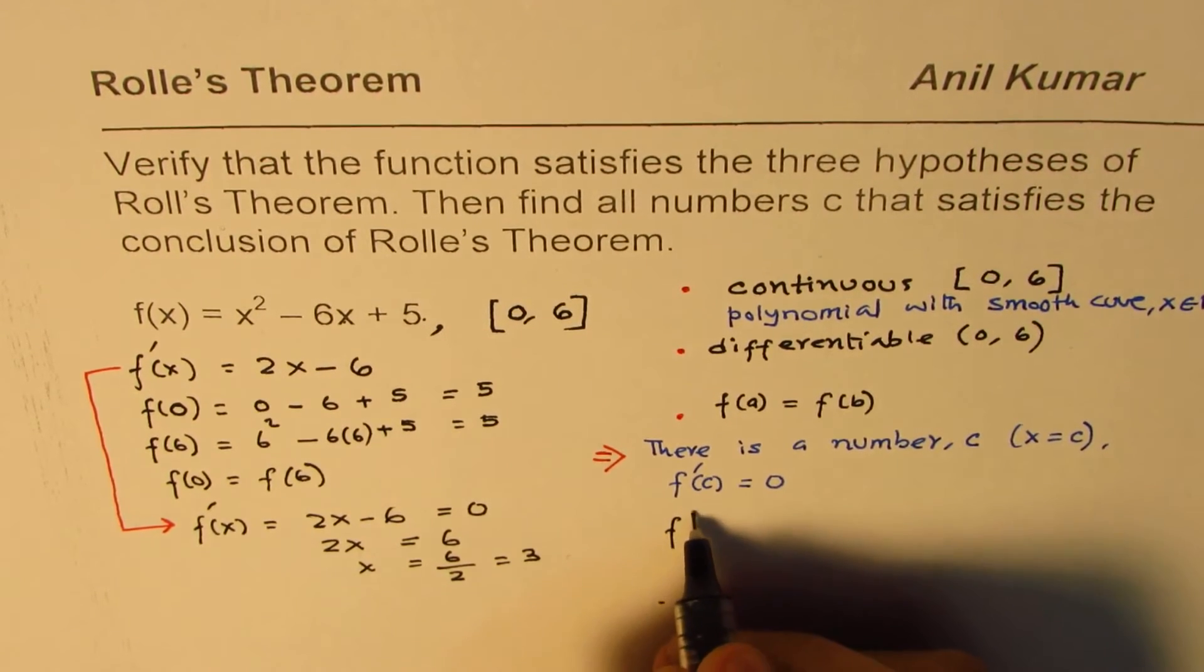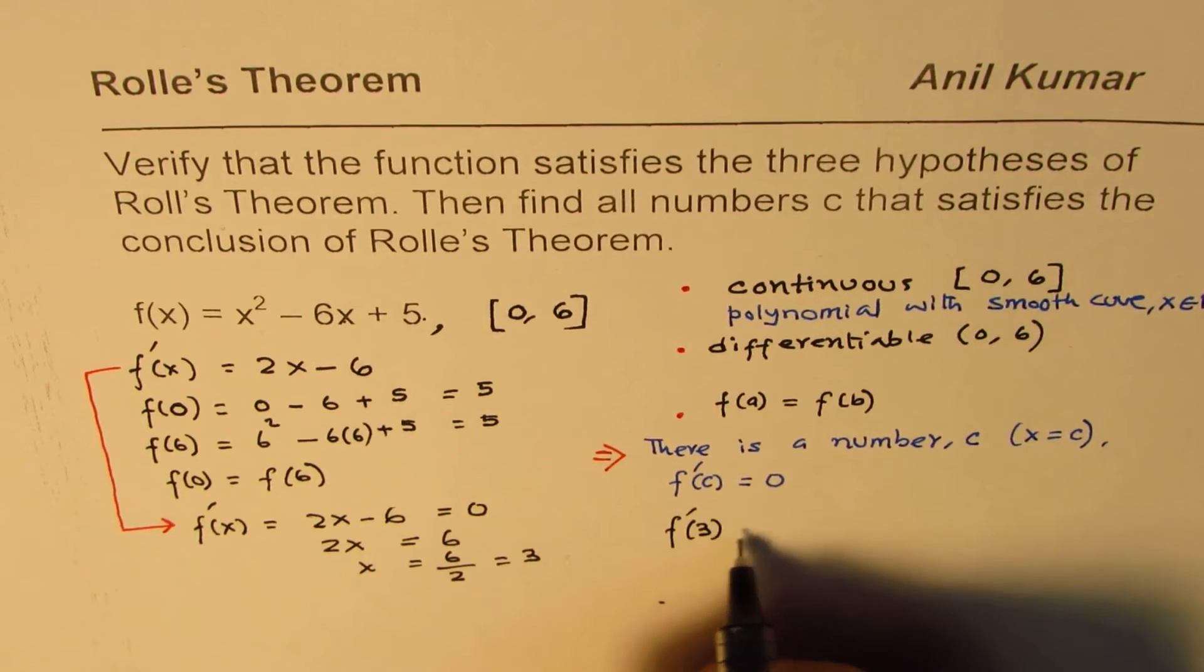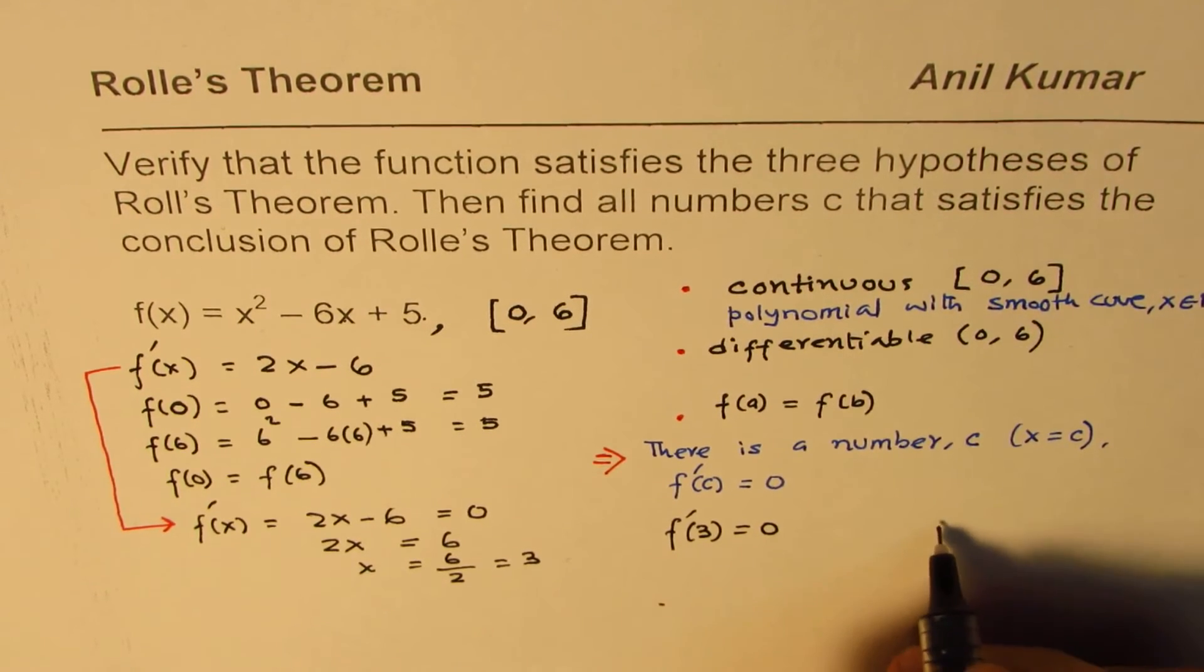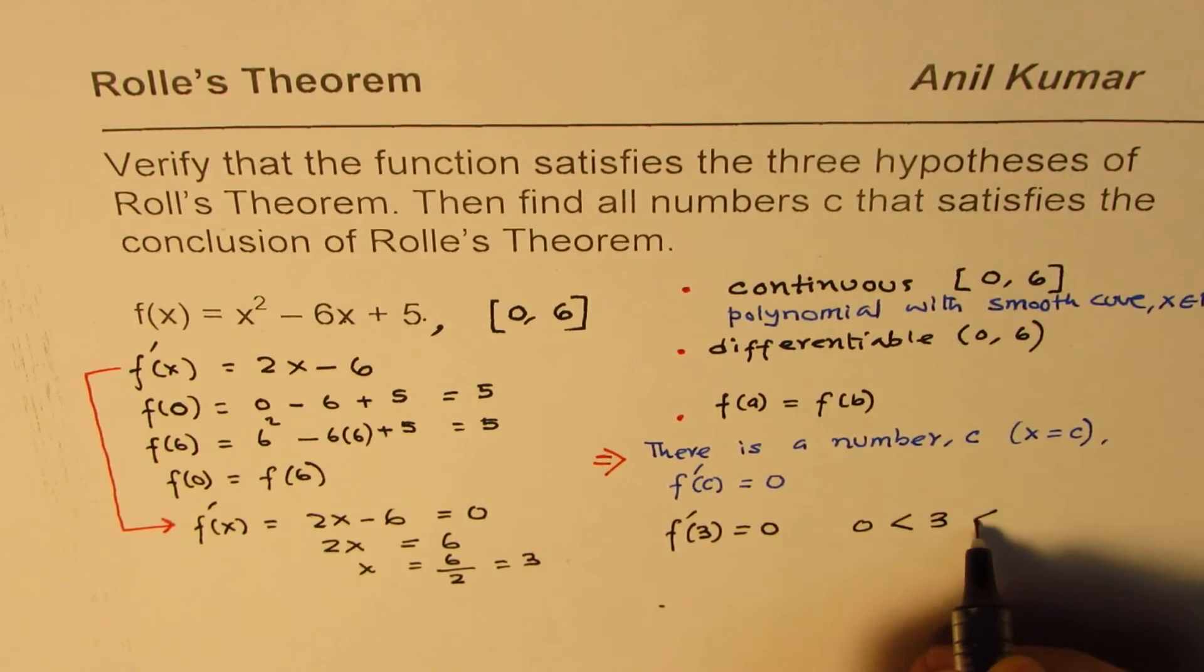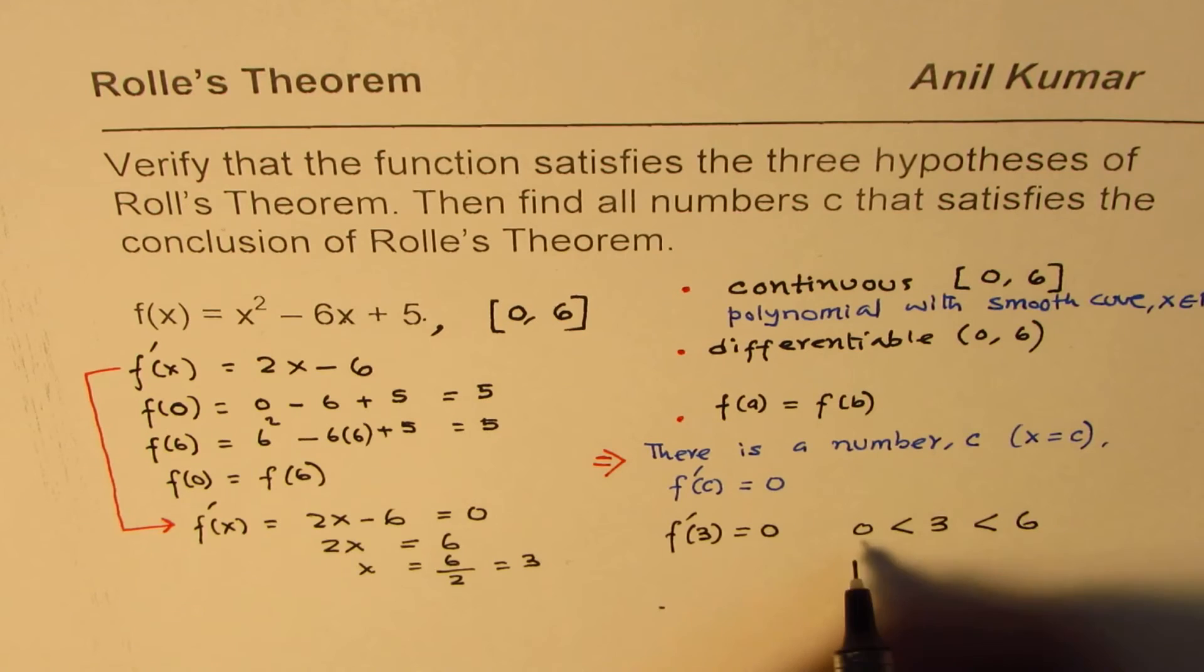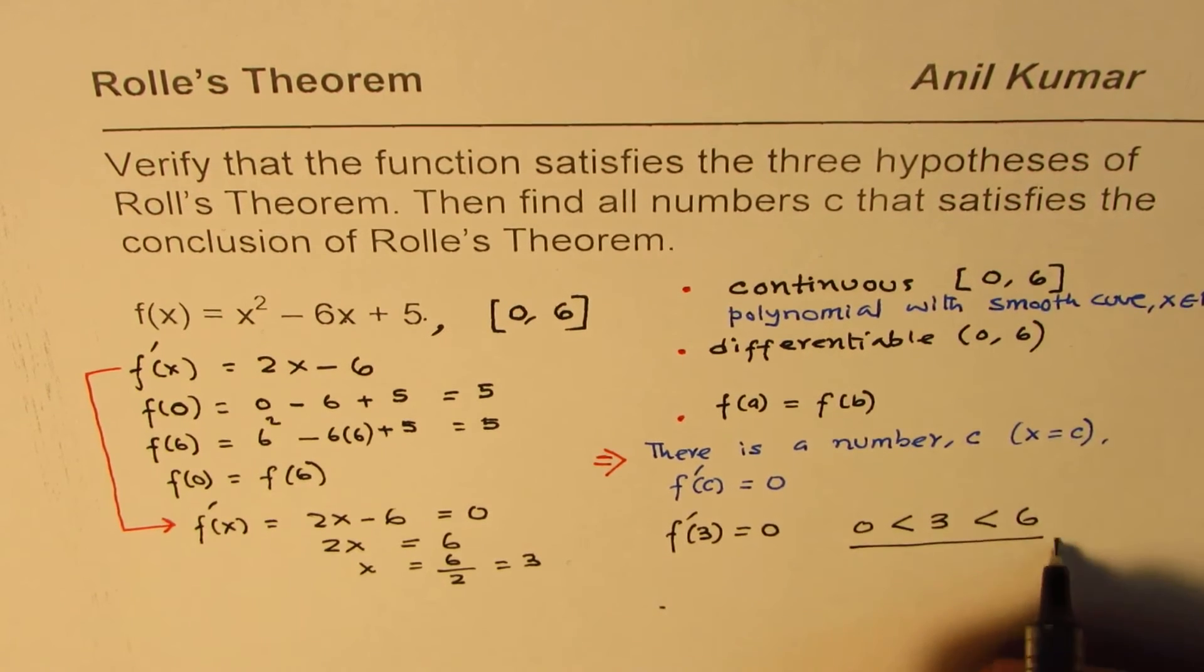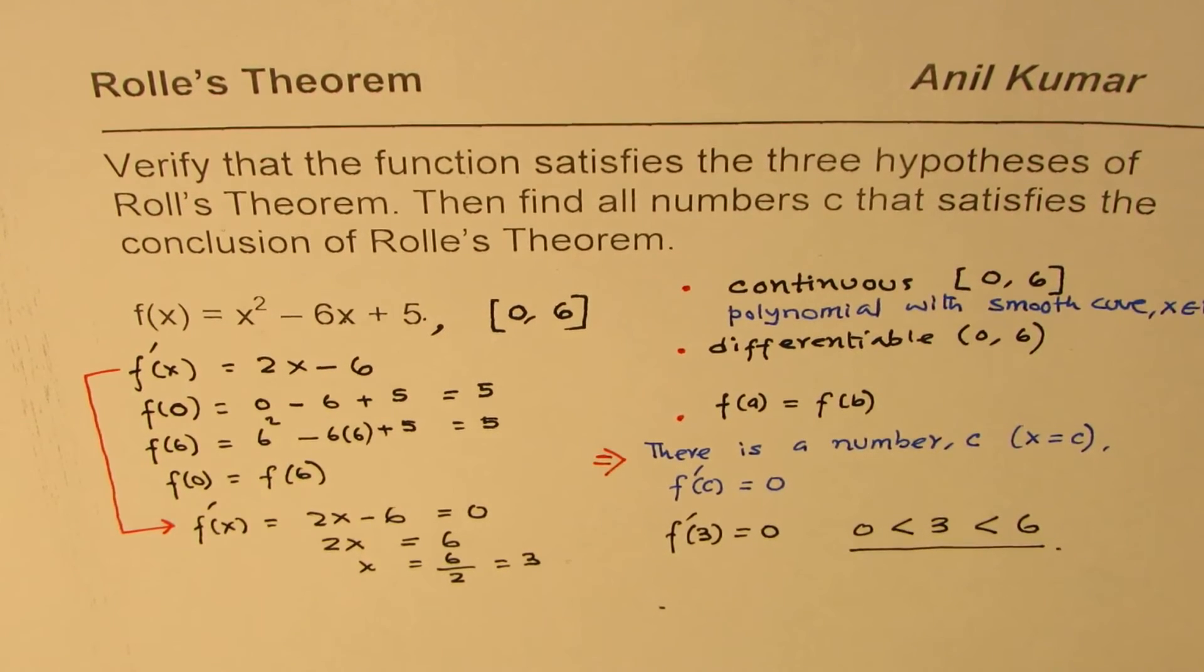So, we found that f'(3) equals 0, and this value of 3 is, as you can see, between the open interval 0 to 6. So, that is how we can verify Rolle's theorem. I hope the steps are clear to you, and it gives you complete understanding of the theorem.